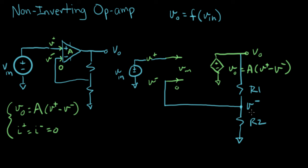So what I'm going to do is just start writing some expressions for things that I know are true. For example, I know that V out equals A times V plus minus V minus. All right, that's what this op-amp is telling us is true.